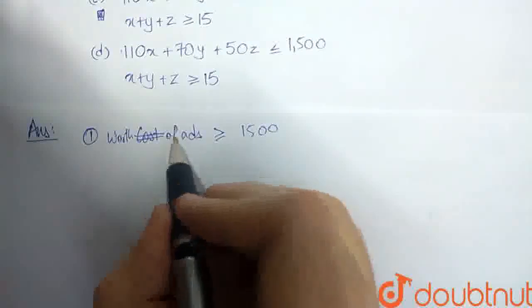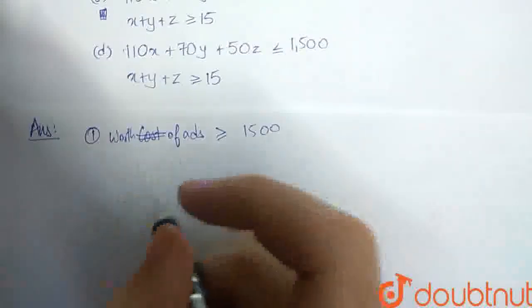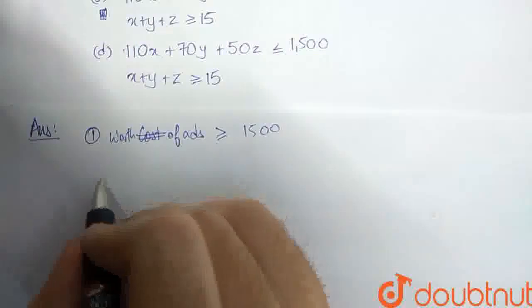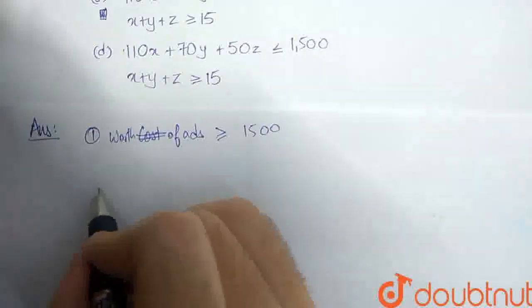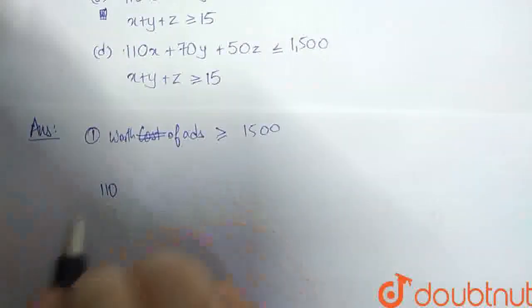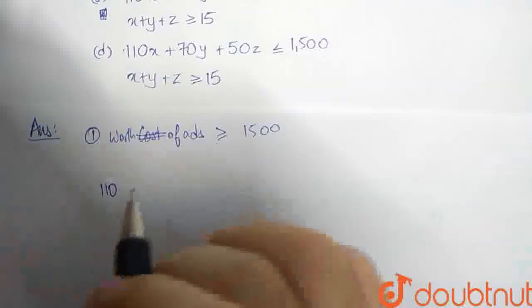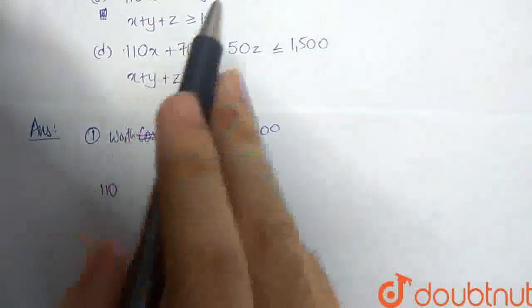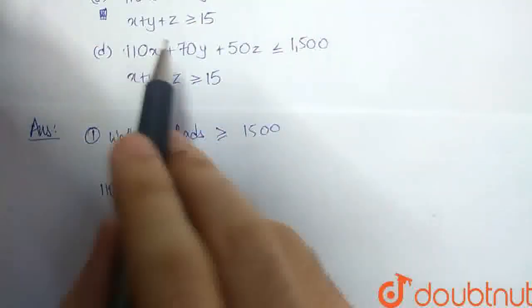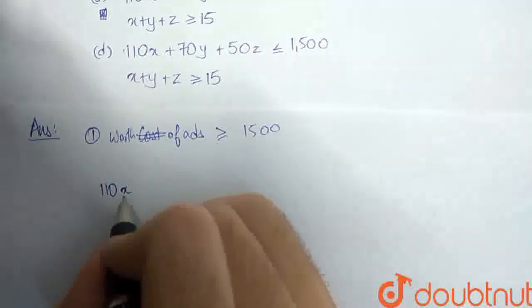So, the cost of full-page ads is $110. One full-page ad costs $110, and the question says that x is assumed to be the number of full-page ads she sells. So, 110x gives us the total cost of full-page ads.